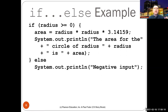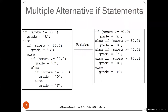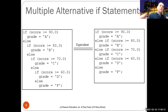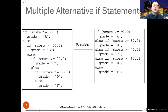We can write a verbose cascade: if the score is greater than 90, the grade is assigned 'A'; else within the else we have another if-else — if the score is greater than 80, grade is 'B'; else if the score is greater than 70, grade is 'C'; else if the score is greater than 60, grade is 'D'; else the grade is 'F'.